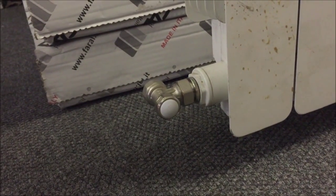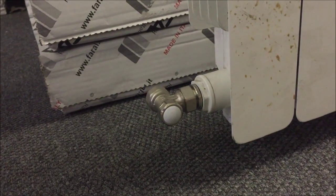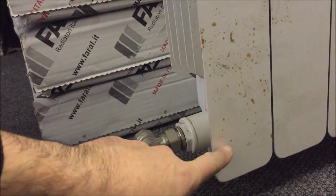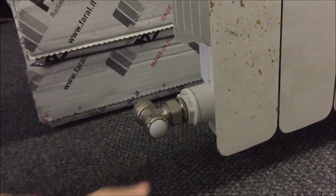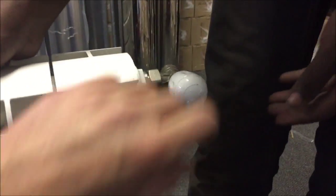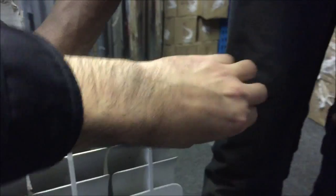First step would be to tighten the valve and drain the water from the radiator. We will shut off the bottom valve, lock shield, and we will shut off the top entry valve. Both of them need to be switched off.